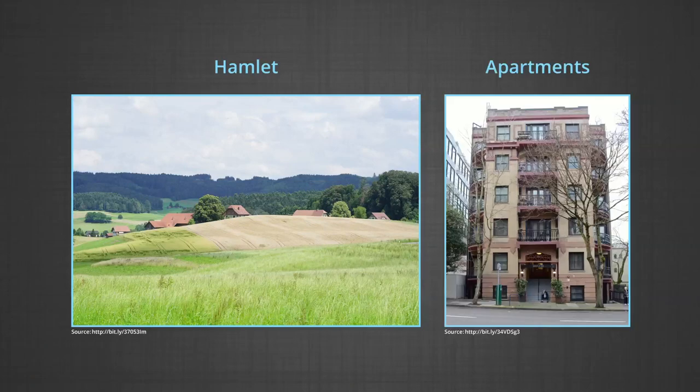Rural settlements. We all live in houses; these houses may be hamlets or apartments. Human settlements are a cluster of houses of any type or size where human beings live. We call such a cluster of houses a village, a town, or a metropolitan city. A settlement is defined as a place where people live and interact with their environment through activities such as agriculture, trading, and entertainment.